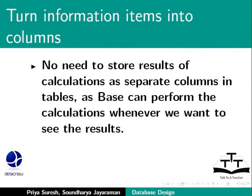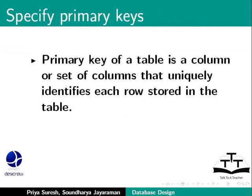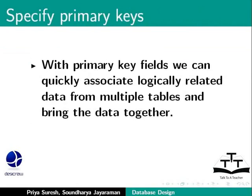Now that we are clear about tables and columns, let us see how we can specify primary keys. What is a primary key? Each table should include a column or a set of columns that uniquely identifies each row stored in the table. This column or set of columns is the primary key of the table. This is often a unique identification number such as a book ID or an author ID. We can use the primary key fields to quickly associate logically related data from multiple tables and bring the data together for us.